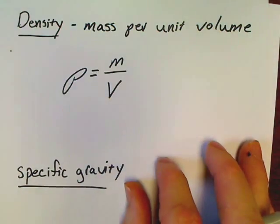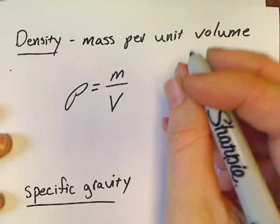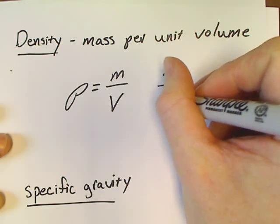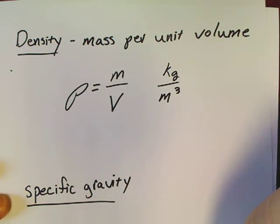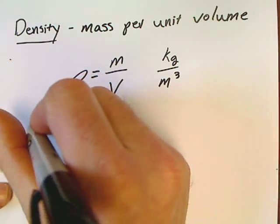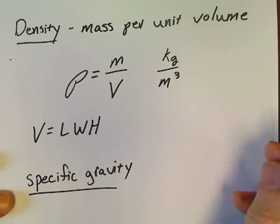Now for the most part, this is physics, so we're going to be using units of kilograms per meter cubed. Now if you're unfamiliar, the only other thing you might use with this: you might end up doing plain old volume equals length times width times height, V = LWH.